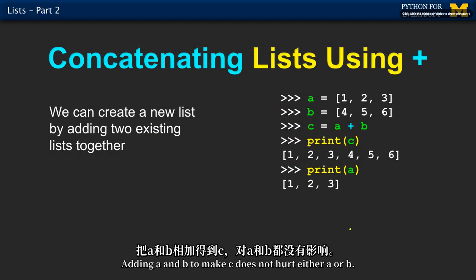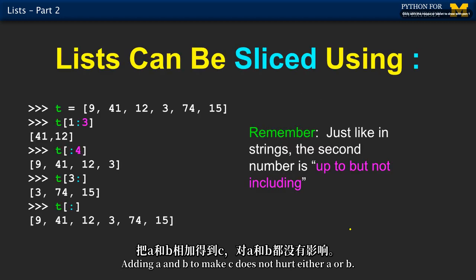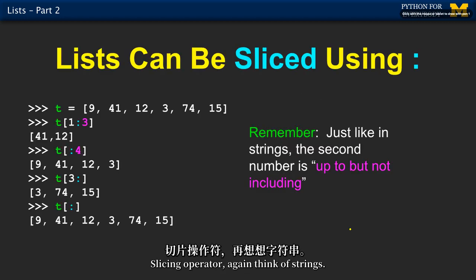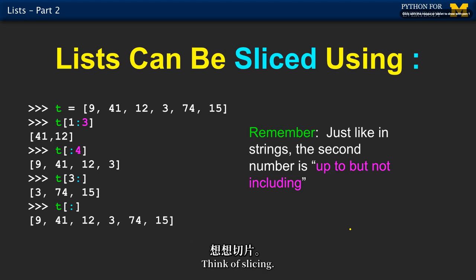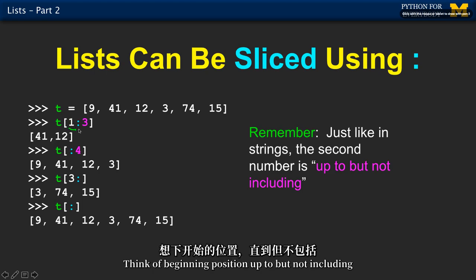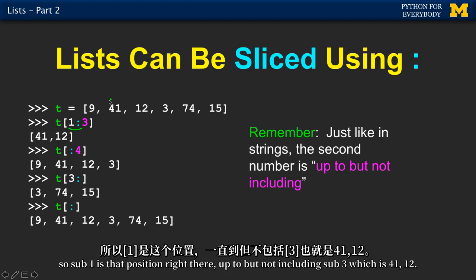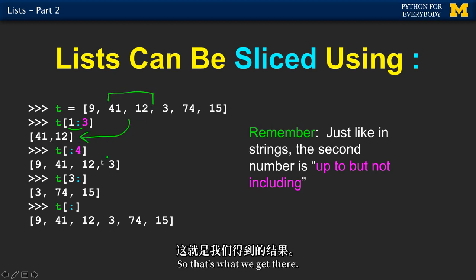Adding A and B to make C does not hurt either A or B. The slicing operator — think of strings, think of slicing. Think of beginning position, up to but not including. So sub one is that position right there, up to but not including sub three, which is 41, 12. So that's what we get there.